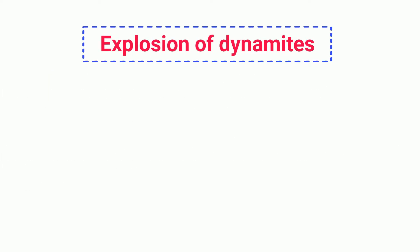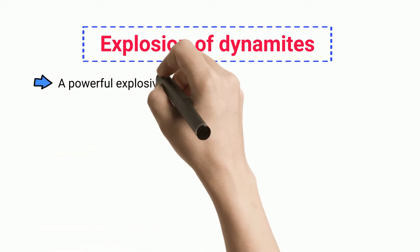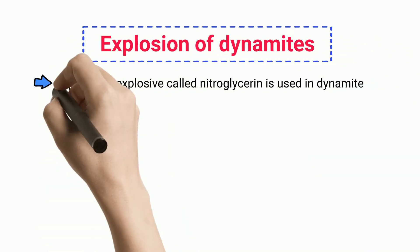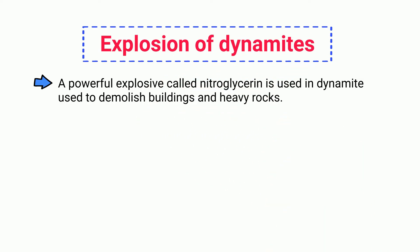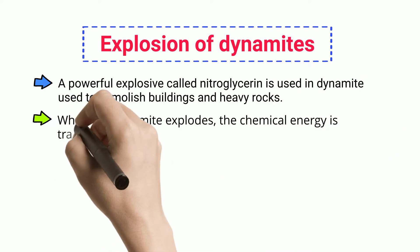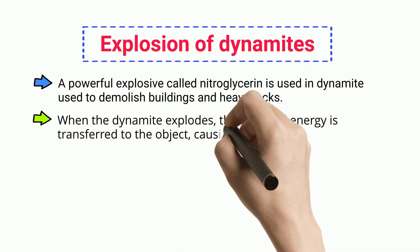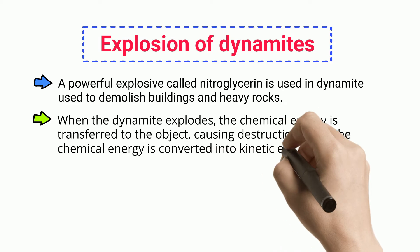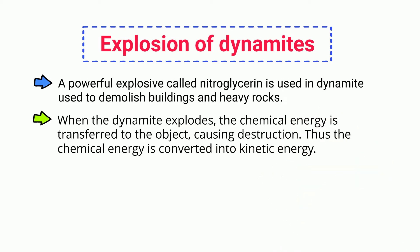Explosion of Dynamites. A powerful explosive called nitroglycerin is used in dynamite to demolish buildings and heavy rocks. When the dynamite explodes, the chemical energy is transferred to the object causing destruction. Thus, the chemical energy is converted into kinetic energy.